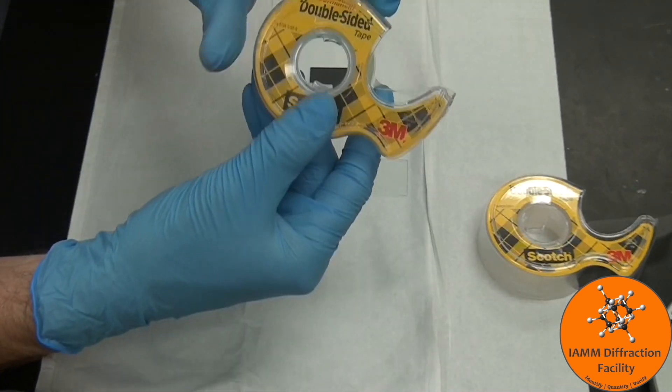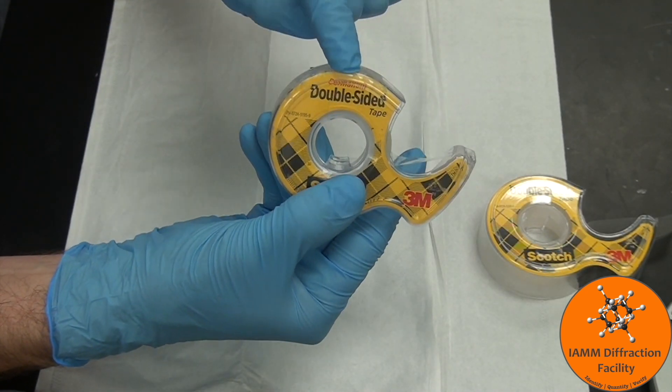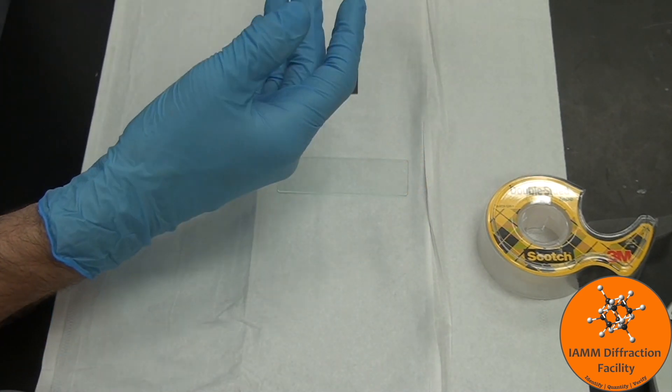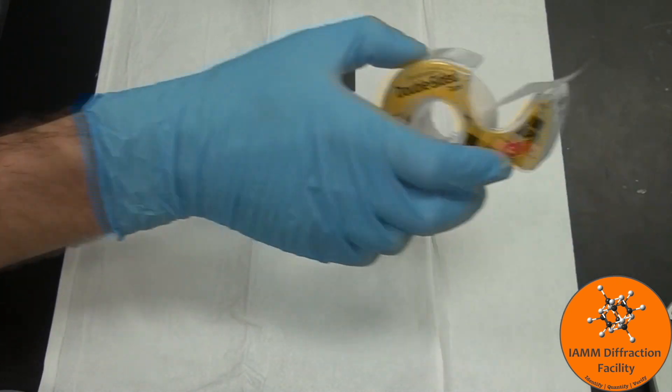I also have some permanent double-sided tape in the lab for heavier samples, but we do not want to use that for anything that is a wafer as that will likely cause it to break as you try to remove it.